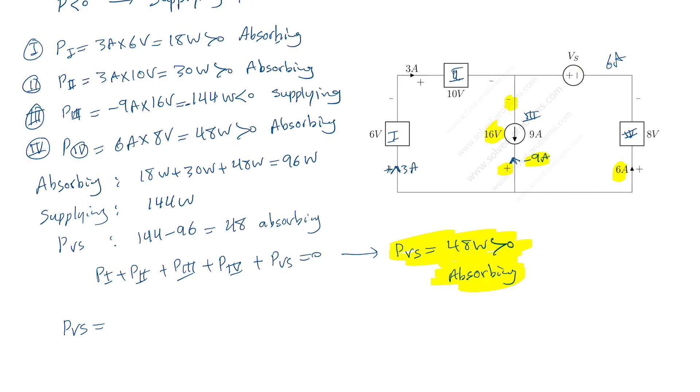We have negative sign convention. We can say that 6 amp in this direction is equivalent to minus 6 amp in this direction. This minus 6 amp now with this Vs definition we have positive sign convention. So we can say that PVs is minus 6 amp multiplied by Vs. But we have the value for PVs. It's 48 watt. So from here we can say that Vs is 48 watt divided by minus 6 amp. That's minus 8 volt. So the voltage of the voltage source, we also were able to find it using just power, power of the element, power of the voltage source.